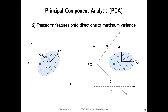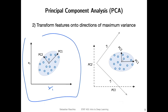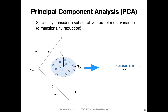Once we have found these principal components — these directions of maximum variance — we rotate the data. The original feature space has x1 and x2. After rotation, we get two new features: PC1 and PC2. We are aligning the data set along this new feature axis; it's essentially a linear transformation. Then, for dimensionality reduction, we consider only the direction with maximum variance and disregard the other one, reducing our data set from two dimensions to one.